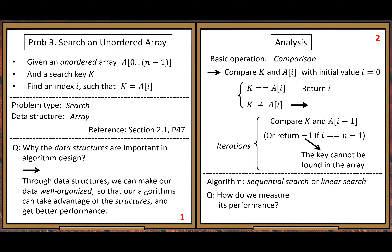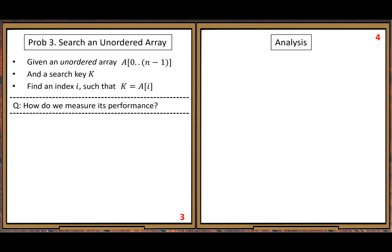The first question we want to answer: how do we measure its performance? Efficiency — how fast is it? If you want to tell people how fast this algorithm is, you need a measure for it. The performance measure here is: count the number of comparisons. The basic operation is comparison, so we just count the number of comparisons we need.